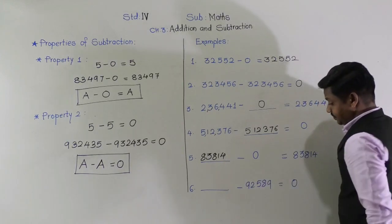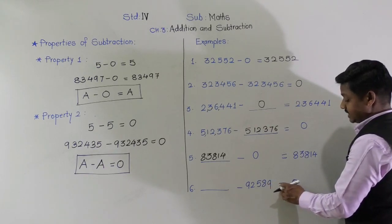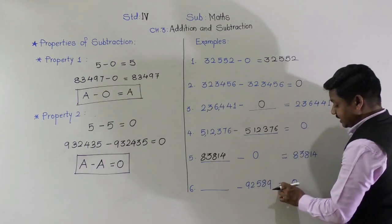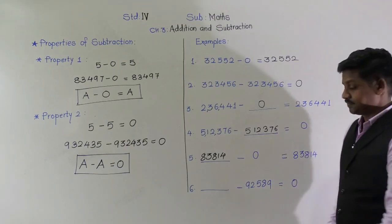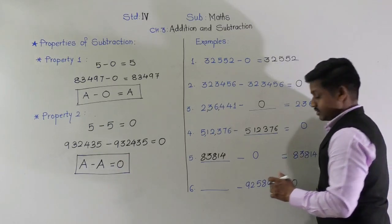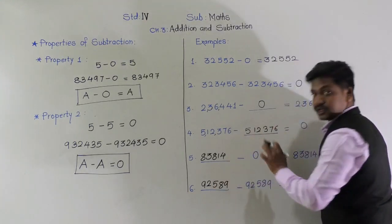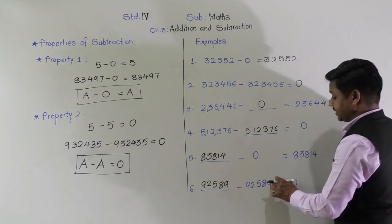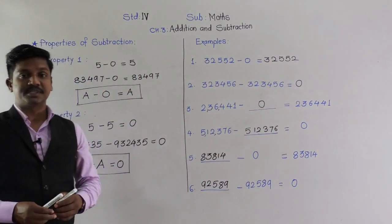Sixth example: blank minus 92,589 equals 0. From an unknown number, 92,589 is subtracted and we get answer 0. Which number should fill the empty place? When we get answer 0, it means the same number was subtracted from itself. So the answer is 92,589. That is, 92,589 minus 92,589 equals 0. These were examples based on the properties of subtraction.